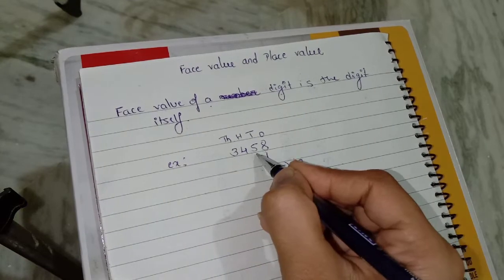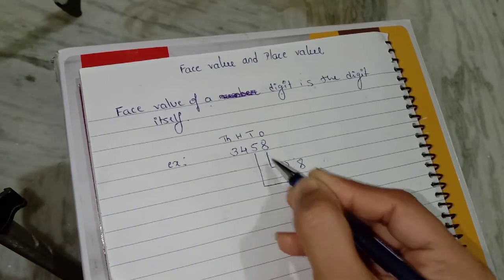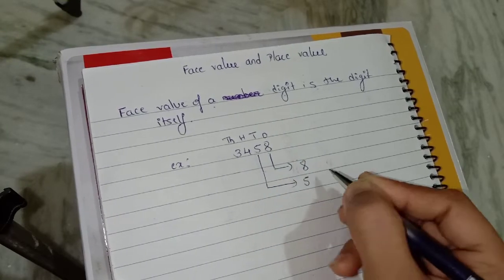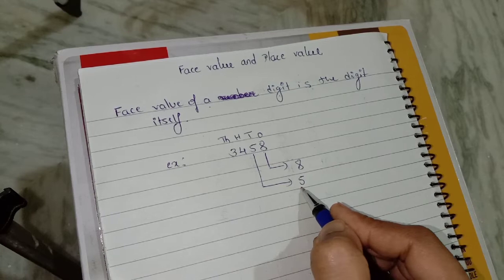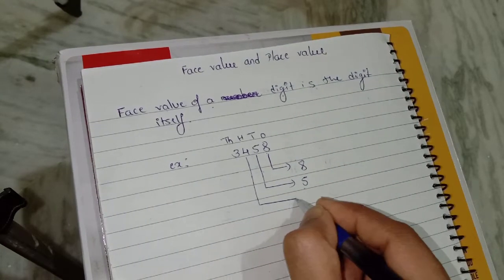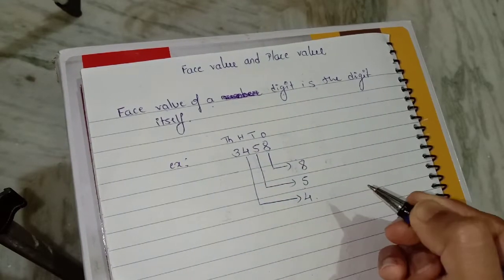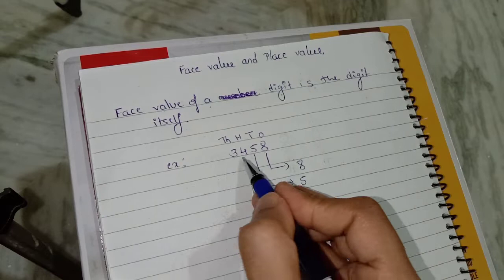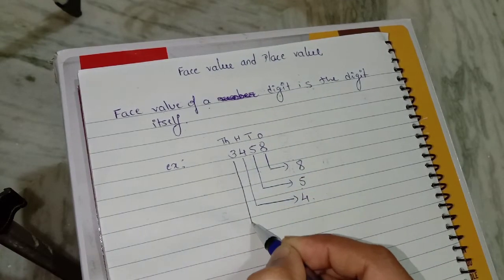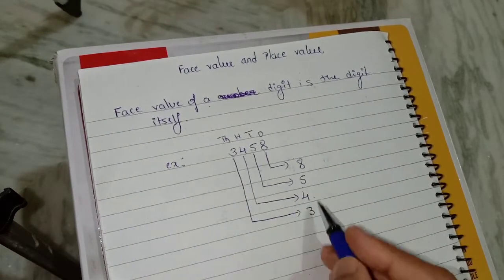Now, what is the face value of digit 5? The face value of digit 5 is 5 — the digit itself. What is the face value of digit 4? It is 4 — the digit itself. What is the face value of digit 3? The face value of digit 3 is 3 — the digit itself.